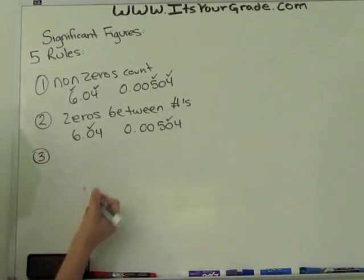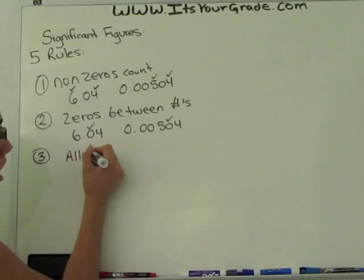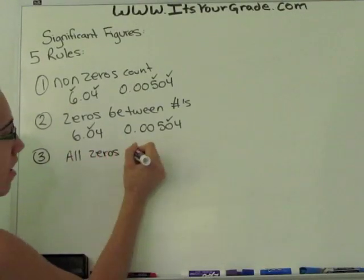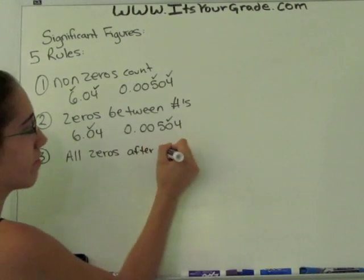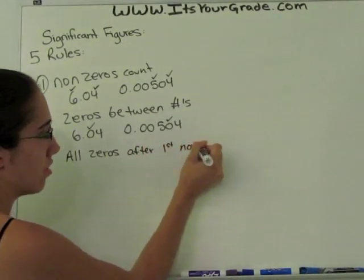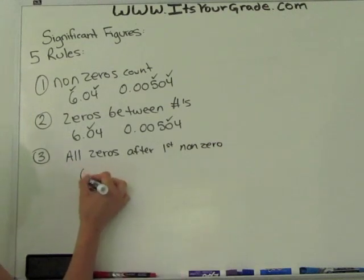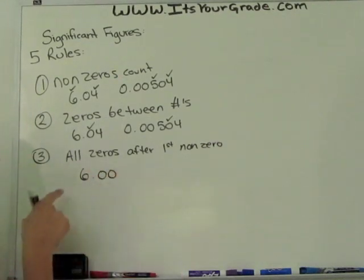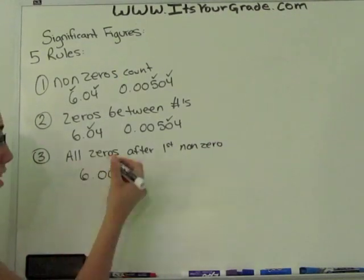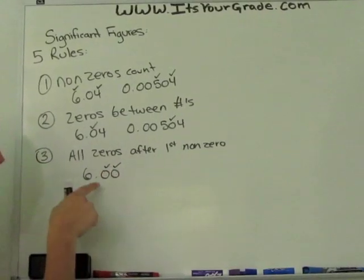The third rule is that all zeros after the first non-zero are significant. So if you have 6.00, this is the first non-zero and these are the zeros that follow and they are significant.